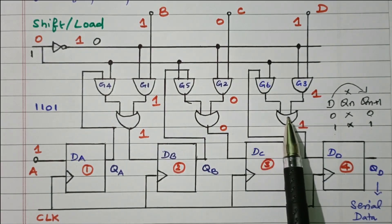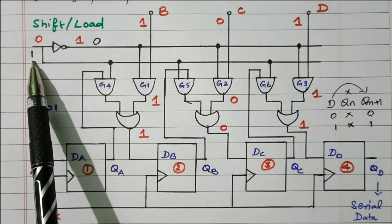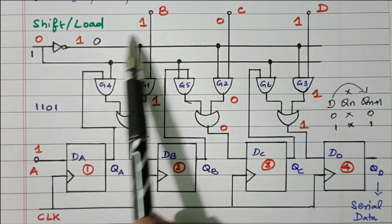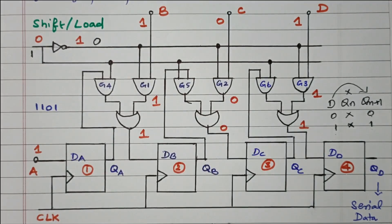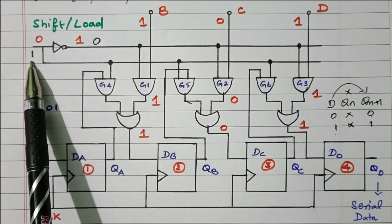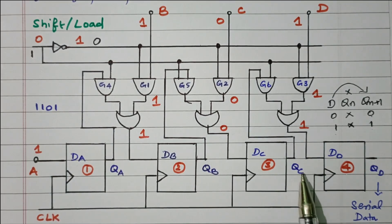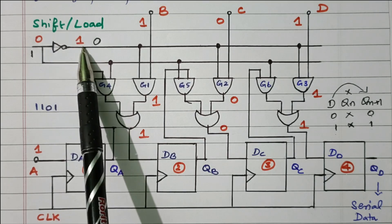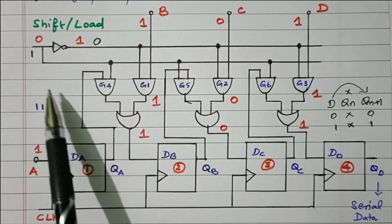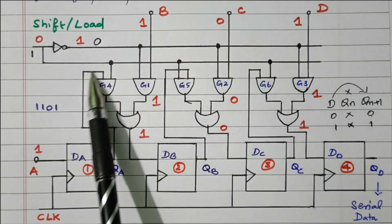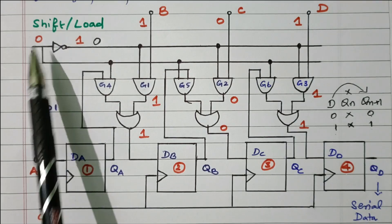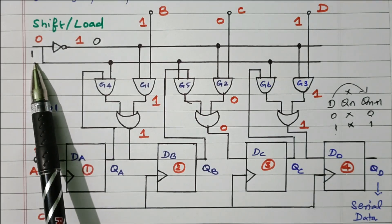Similarly, QB is shifted to DC through G5 and the OR gate. QC is shifted to DD through G6 and the OR gate. So shifting occurs when the control input is one. To summarize: control input zero means parallel loading (after the NOT gate the line becomes one, enabling G1, G2, G3); control input one means shifting the data from one flip-flop to the next flip-flop.